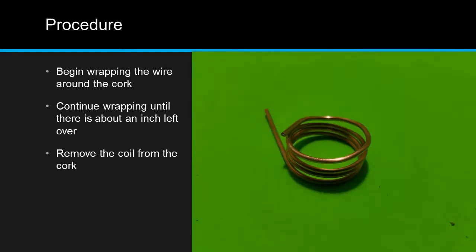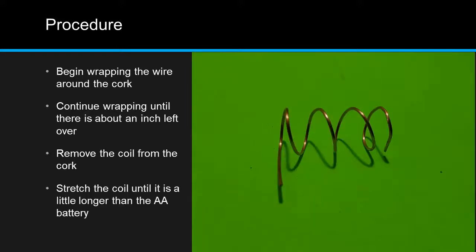Slide the coil you just made off of the cork and stretch it out until it's a little bit longer than the AA battery.